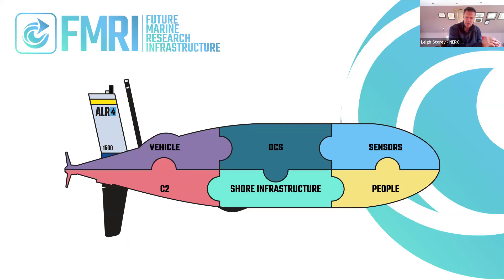The C2 side — command and control and communication — means sensors that support easy data transfer, but potentially in future sensors that interact with the onboard control system. As we move to making these platforms more autonomous, the data captured by scientific sensors goes into the control system and informs where the platform goes next rather than being actively piloted by someone ashore.